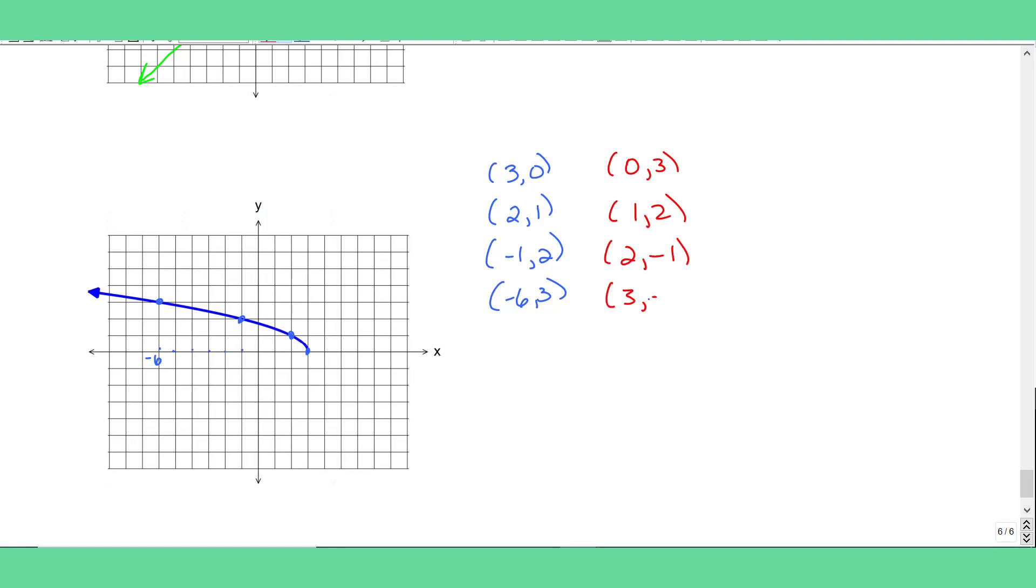And just reverse those ordered pairs. So I have 0, 3, 1, 2, 2, negative 1, and 3, negative 6. And just check for symmetry. And there you are.